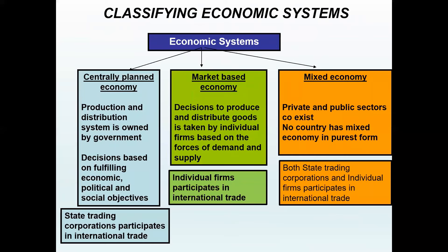Other parameters to analyze the economic environment of a country is to look at the economic system. Primarily, there are three types of economic systems: centrally planned, market-based, and mixed. In centrally planned economic systems, the production and distribution system is owned by the government, and all decisions regarding production and distribution are taken by the government with the objective of achieving economic, political, and social objectives. In such systems, state trading corporations participate in international trade.